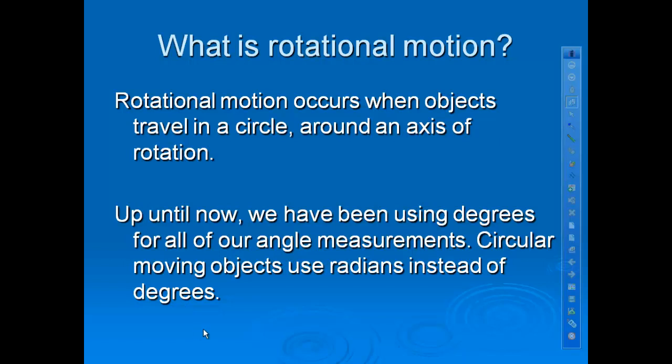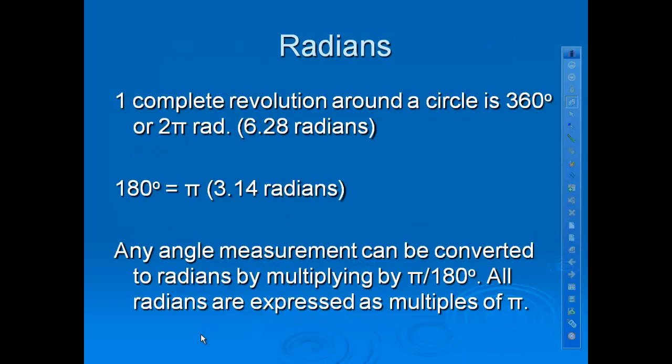I'm not sure if you guys have gotten to the unit circle yet in math, but we're going to do a little bit of practice taking a degree measurement and converting it into a radian. So, what a radian is, is a fraction of a circle. And there are 6.28 radians in one complete circle. We also say that that's 2π. So, 2π radians is 360 degrees all the way around the circle. Consequently, halfway around the circle would be 180 degrees, and that is equal to 3.14 radians, or π.